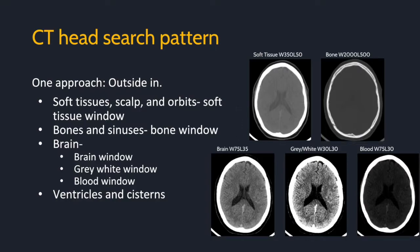The gray-white preset is a narrow window to exaggerate the differences between gray and white matter. It can be a sensitive screen to look for loss of gray-white differentiation. The blood window highlights above the skull — notice blood in the inferior sagittal sinus stands out from the brain. This is helpful for looking for extra-axial hemorrhages. Only axial images are shown here, but I use all three reformats.